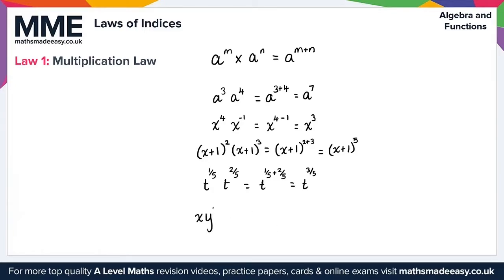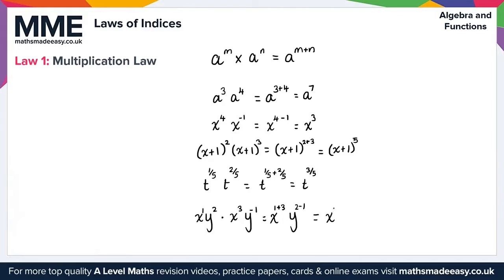Finally, we can also have multiple variables. For example, x y squared times by x cubed y to the minus 1. We treat each variable separately. For the x variable: x to the 1 times x cubed gives x to the 1 plus 3. For the y variable: y squared times y to the minus 1 is 2 plus minus 1, which is 2 minus 1. Simplifying, x to the 4 and y to the 1, which we write simply as y.